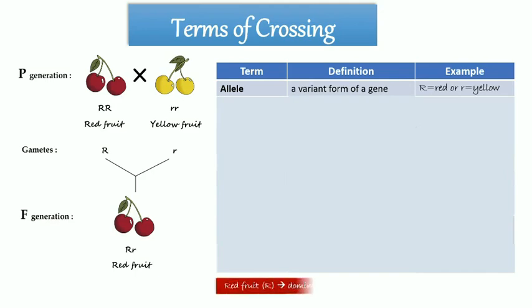In this crossing, red fruit is called dominant trait, because it is symbolized by capital letter. Dominant trait will cover recessive trait. Yellow fruit is recessive trait. It is symbolized by lowercase letter. Recessive trait only appears when there is no dominant trait in the genotype.